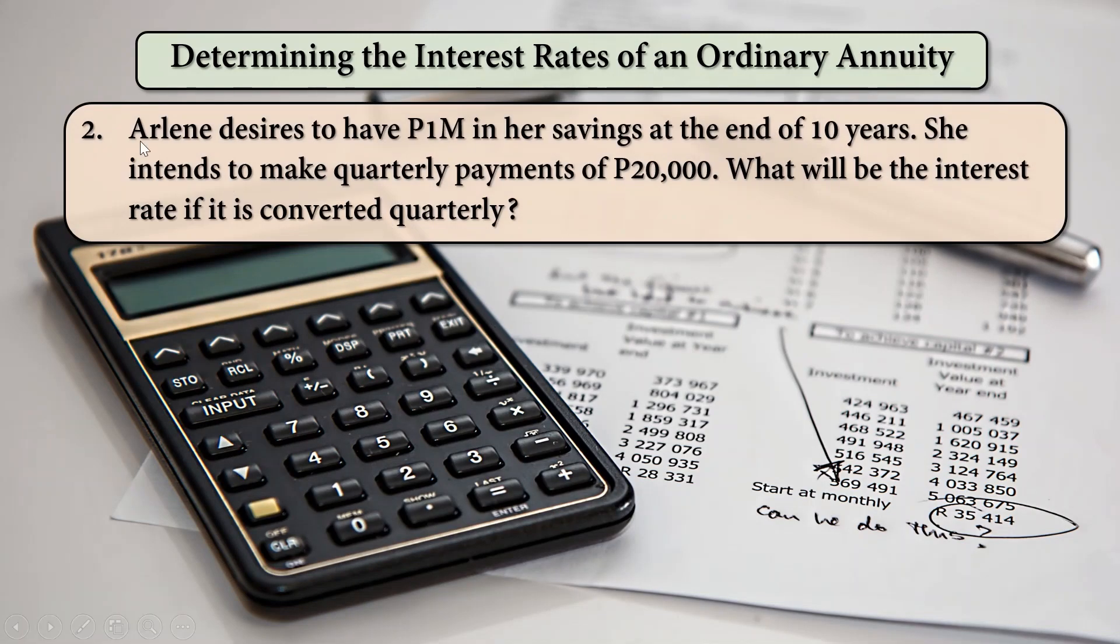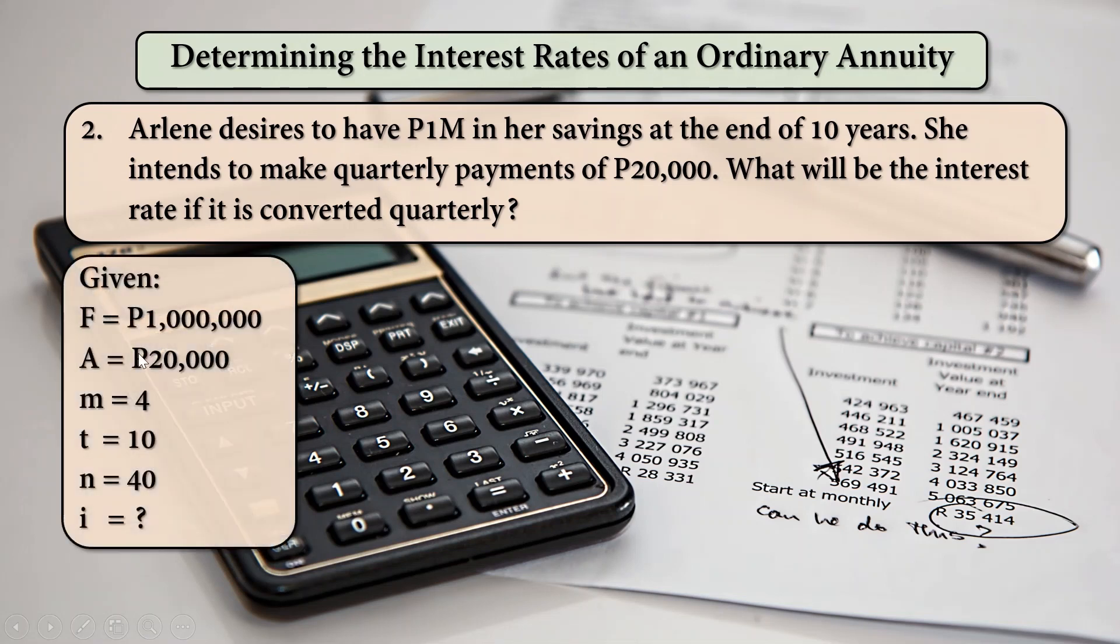The second example, Arlene desires to have 1 million pesos in her savings at the end of 10 years. She intends to make quarterly payments of 20,000 pesos. What will be the interest rate if it is converted quarterly? So, given F is 1 million, A is 20,000, M is 4, T is 10. And so, N is 40 because 10 times 4 is 40.